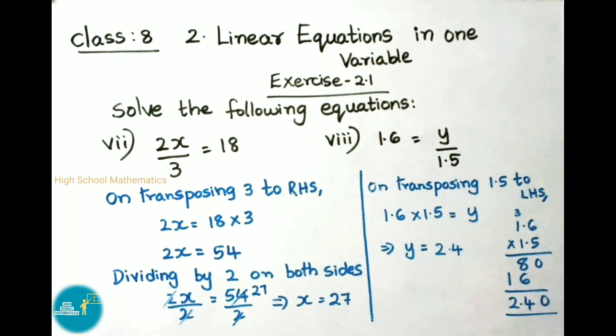Now 8th sum: 1.6 = y/1.5. We are going to remove this 1.5 by transposing. On transposing 1.5 to LHS, that is left hand side, divided by becomes multiply. So 1.6 × 1.5 = y. That implies y equals... Now we have to multiply 1.6 and 1.5.